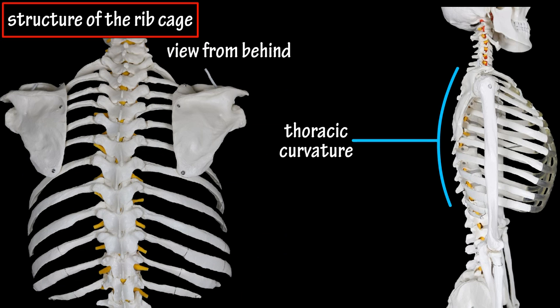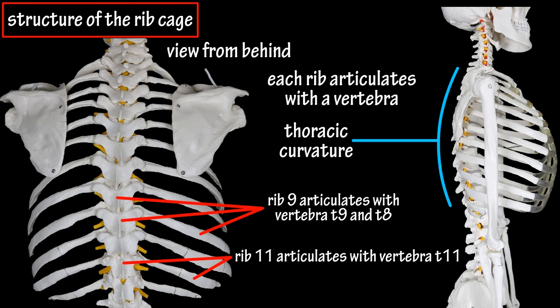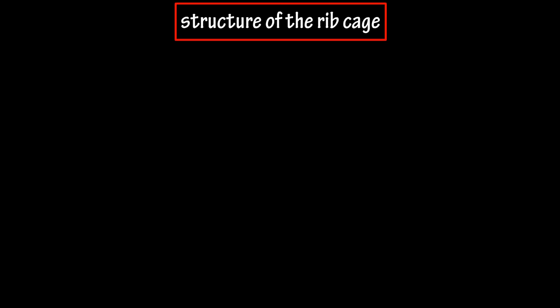The thoracic vertebrae make up the thoracic curvature in the vertebral column, as you can see here. Each of the 12 ribs articulate, or form a joint, with the corresponding vertebra. For example, rib 11 articulates with vertebra T11, and some ribs, such as rib 9, articulate with T9 and the vertebra above, T8. And those are the basics on the structure of the rib cage.